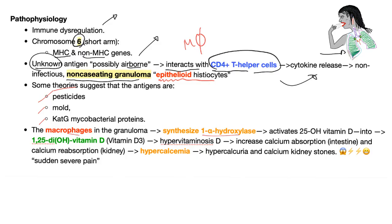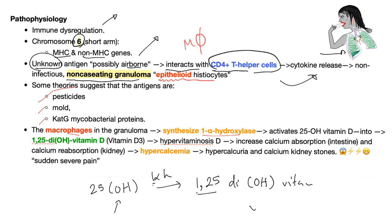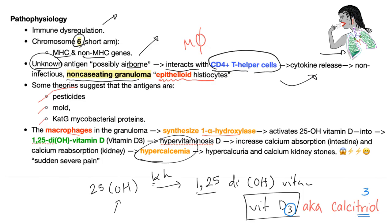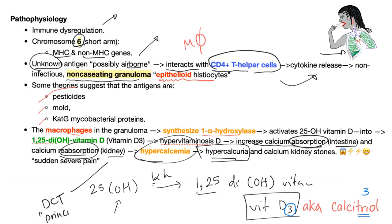The macrophages in the granuloma synthesize 1-alpha-hydroxylase, which activates 25-hydroxyvitamin D into 1,25-dihydroxyvitamin D — also known as vitamin D3, the active form of vitamin D. This leads to hypercalcemia because it increases calcium absorption in the GI tract and calcium reabsorption in the kidney, especially at the distal convoluted tubule, particularly at the principal cell. If there is hypercalcemia, there will be hypercalciuria, and an increased risk of calcium kidney stones. Kidney stones are very painful — the question will describe sudden, severe pain, like 10 out of 10.